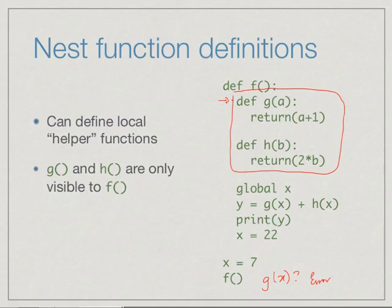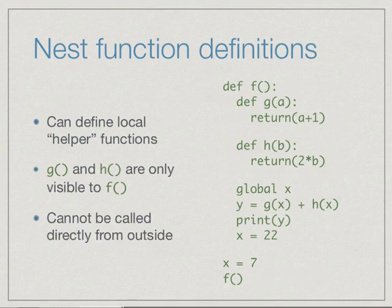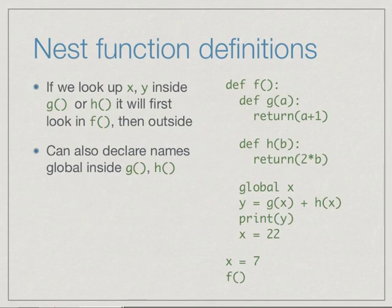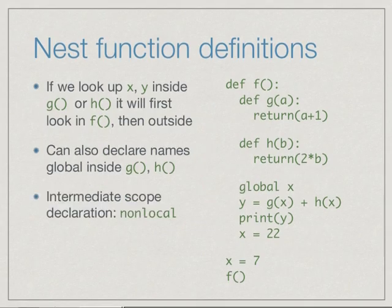The same rules apply. If we look up x inside g or h—if you look up an x here—it will first try to look in f. If it is not there in f, it will go outside. We can declare it global, in which case we can update it within g or h. Or it will use the same rule as before: if we do not update an immutable value, it will look outside, and if it is a mutable value, it will allow us to update it from inside.